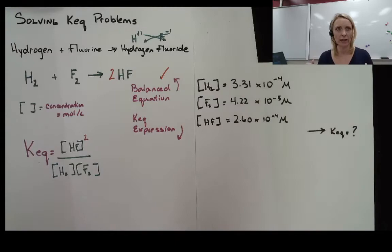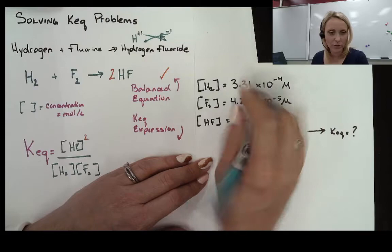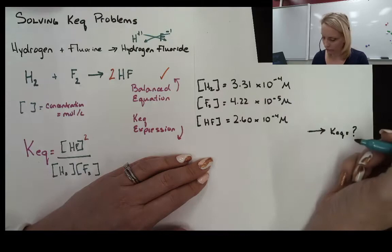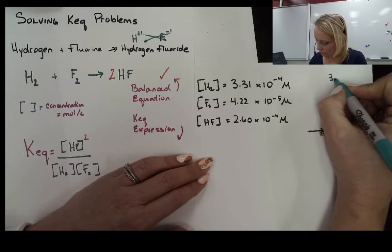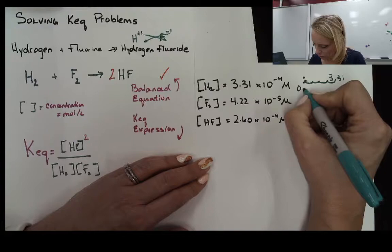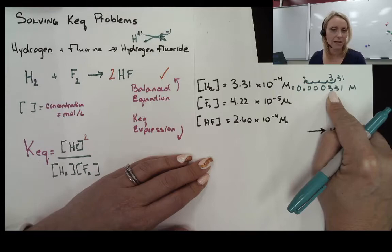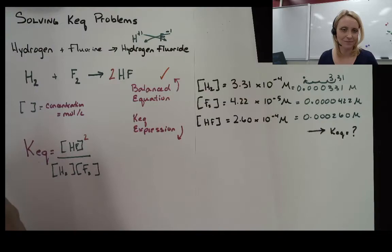Concentrations in chemical equations are very often given in scientific notation. Scientific notation is a way to take numbers that are kind of big and write them in a more compact form. For example, 3.31 times 10 to the minus 4 means the decimal point is going to move in the negative, or towards the left, direction four spaces. So 3.31 backed up four spots gives us 0.000331. This is the same number, but writing it out gets ungainly, so often these things are written in scientific notation.